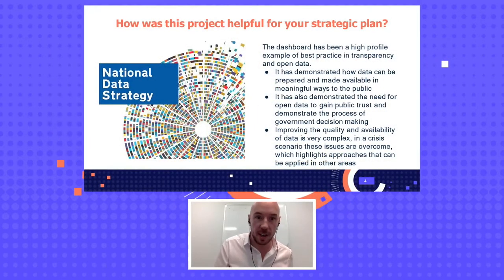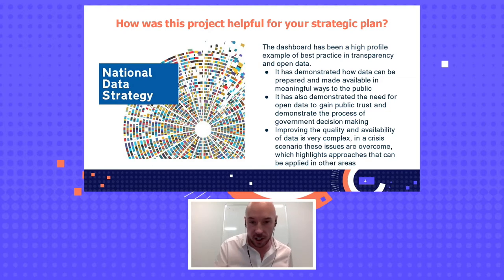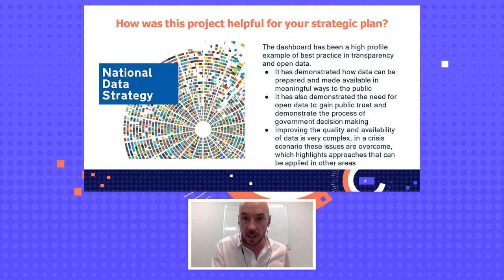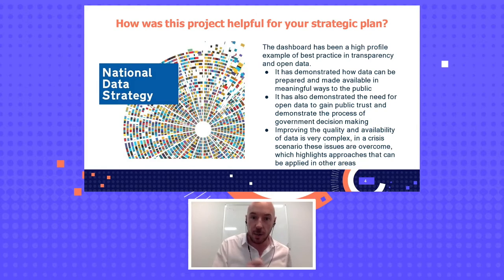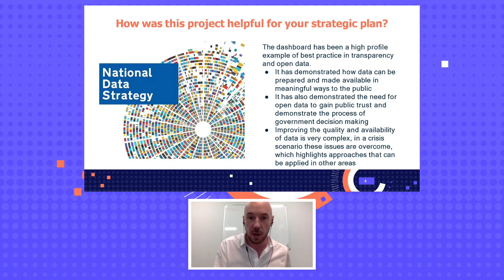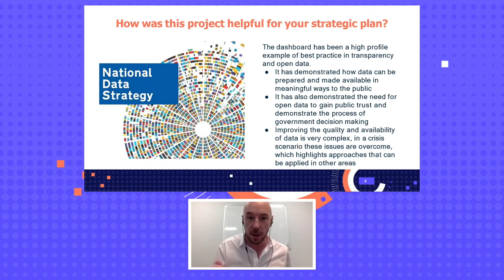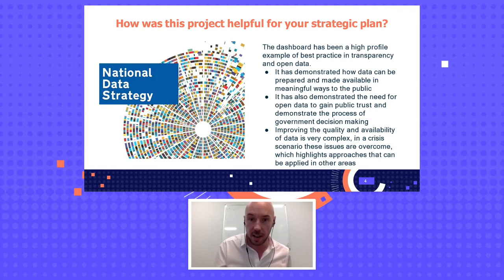For us, it really demonstrated how data can be made available and meaningful to the public. We often find there are issues in government around data sharing and publishing data to a good standard. What we find in a crisis situation is that all of those problems tend to melt away — we're able to move more quickly, there's a real need to get things done. We managed to overcome many of those barriers, demonstrating the need for open data to gain public trust and demonstrating the process of government decision making in a way directly related to a real-life event. Improving the quality and availability of data can be extremely complex and expensive. But in a crisis scenario, we have to.